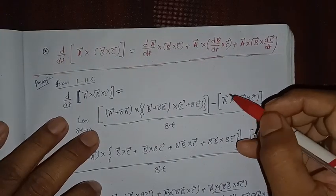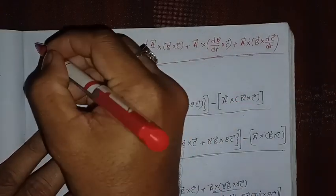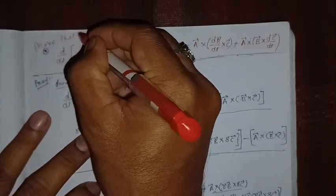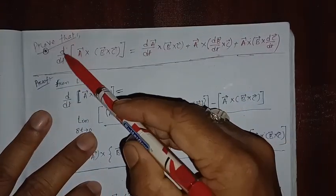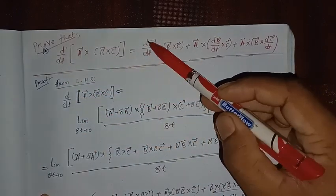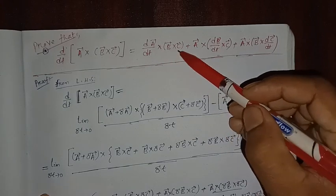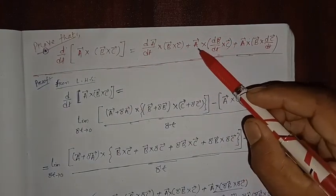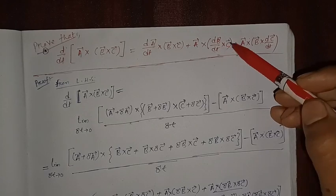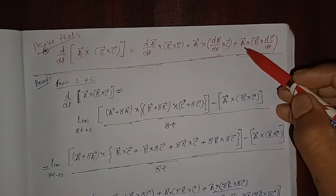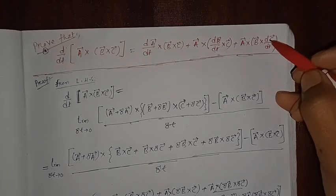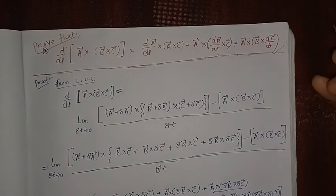Hello everyone. In this video we are going to prove that d/dt of (a × b × c) will be equal to (da/dt × b × c) + (a × db/dt × c) + (a × b × dc/dt).